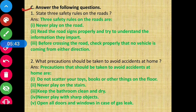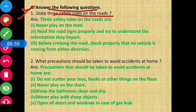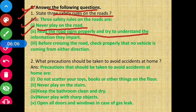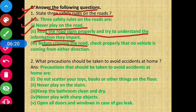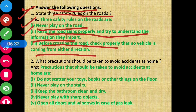Moving to Section C. Question 1 - State three safety rules on road. First, we should never play on the road. Second, read the road signs properly and try to understand the information they impart. Third, before crossing the road, check properly that no vehicle is coming from either side — always look left and right carefully.